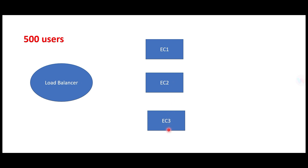The load balancer allocates 50 users to each instance to distribute the workload. Your load balancer is like your team lead — he or she divides the work among resources, which are like team members. Each team member has distributed 50 tasks, and they can only do a certain number of tasks within their working hours.